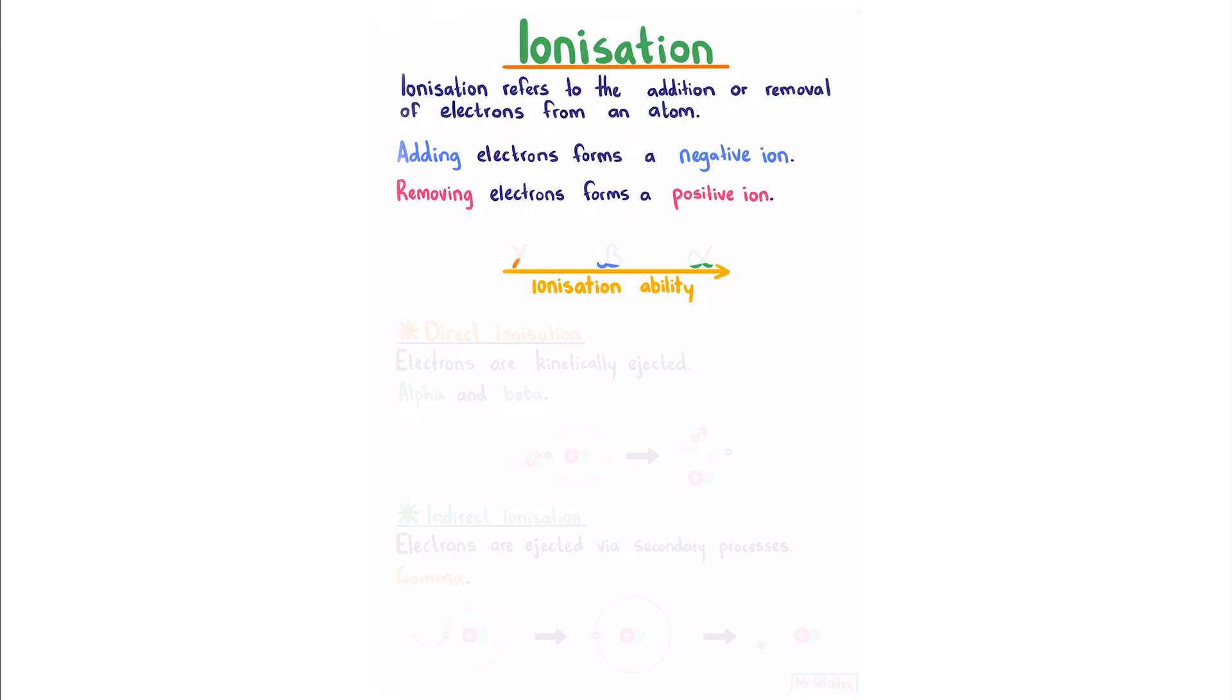Ranking radiation by ionization ability: In general, more charge means more ionization. And so gamma has the least, beta in the middle, and alpha with the most. We can also characterize two types of ionization.